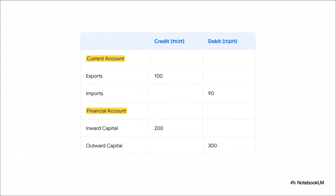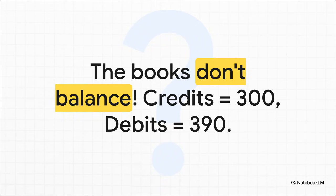Let's add the financial account to our running example. Say foreigners invested $200 million in our economy — that's a credit. And our own investors sent $300 million abroad — that's a debit. On the credit side we have 100 from exports plus 200 from foreign investment, totaling 300. On the debit side we have 90 for imports plus 300 for investments abroad, which is 390. The books don't balance — we've got more money going out than coming in. So what happens now?